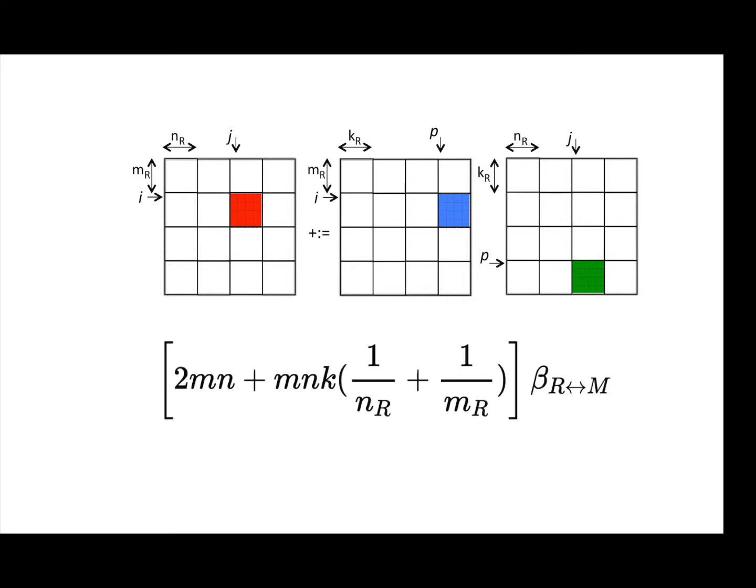So far, we've discussed relatively naïve blocking of matrices A, B, and C, where all three of them are blocked into roughly square submatrices, and then the computation is orchestrated by bringing blocks of C, A, and B into the registers, performing a matrix-matrix multiply with those blocks, and then writing the result back out to memory.